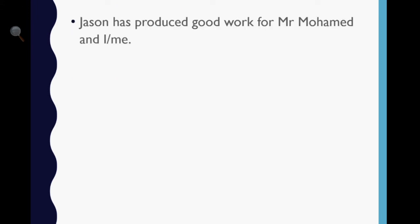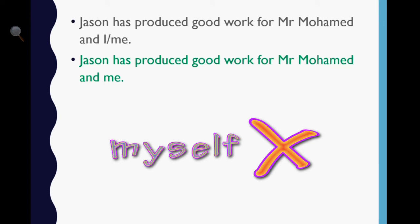Be careful to use I and me correctly. Here's an example. There's an easy trick to know whether it's I or me without going into a grammatical explanation. Just take Mr. Muhammad out of the sentence and try it. Jason has produced good work for me. Obviously, it would sound silly to say that Jason has produced good work for I. Therefore, in this case, it is me. And please don't write myself instead of me. This is commonly done these days, but it's not correct and it sounds pompous.